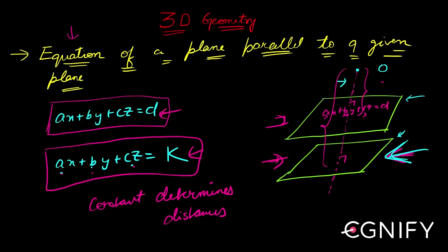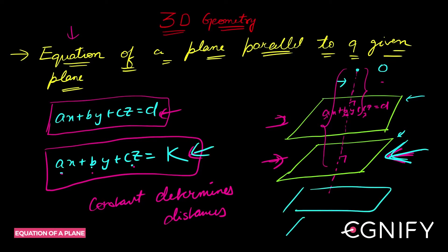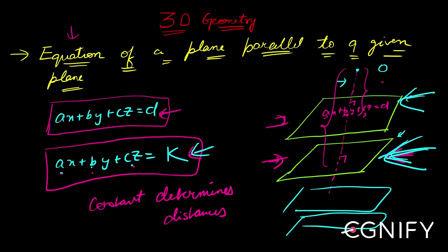That constant equals k. As k keeps varying, I keep getting more and more planes parallel to the first plane. To choose a specific plane, I need one more condition — either I need to know the distance from the origin, or I need a point on that plane.